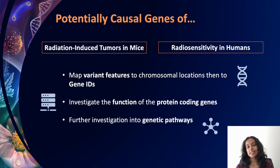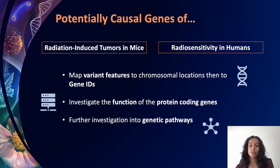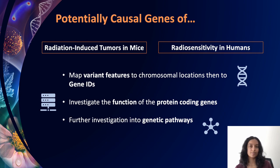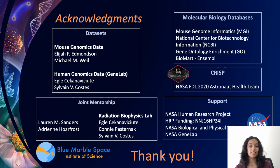We examined the outputted potentially causal features and mapped these variant locations to genes. Our results opened the door to more research into the putatively causal genes of radiation induced tumors in mice and radiosensitivity in humans. Thank you for listening.